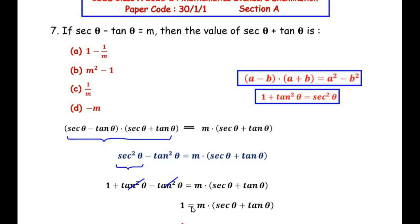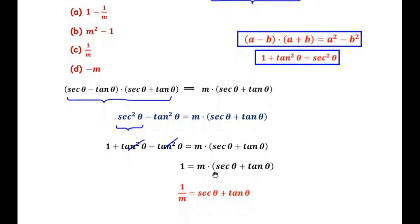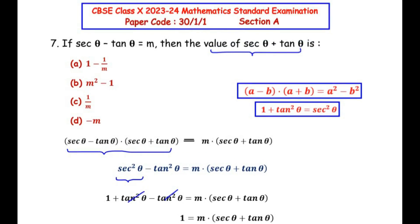So we get 1 = m(sec θ + tan θ). To find sec θ + tan θ, we move m to the other side, giving sec θ + tan θ = 1/m. This is the answer, corresponding to option C.